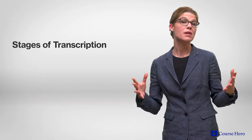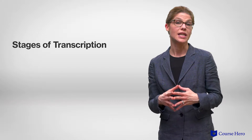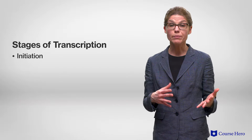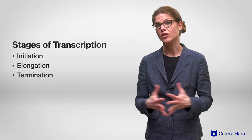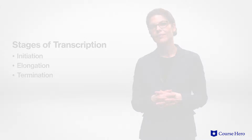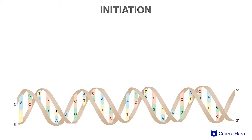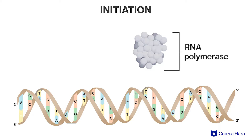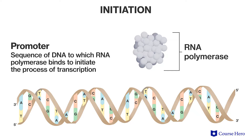Transcription happens in three main stages: initiation, elongation, and termination. During initiation, the enzyme RNA polymerase binds to a specific sequence known as the promoter. This marks where transcription of a gene begins and which of the two DNA strands will be used for the process.